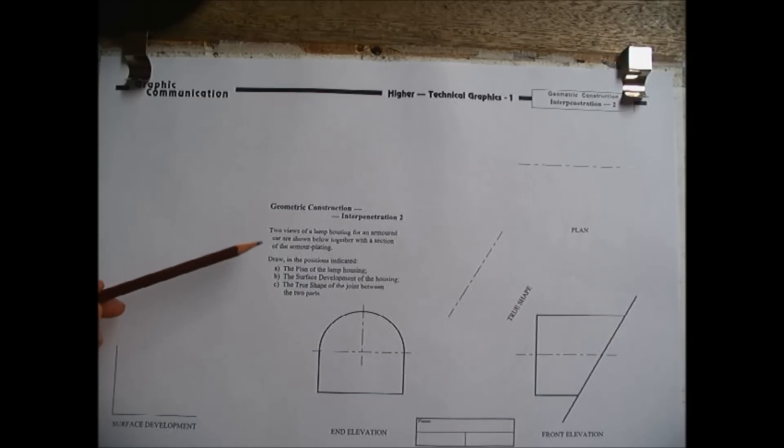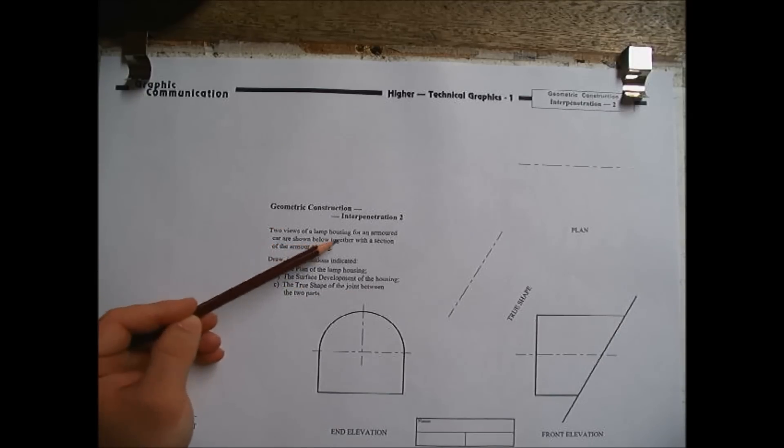So drawing number 2, a bit more complex, it's got a couple more elements into it. The big thing is it's got a curve. So again read the question. It says two views of a lamp house for an armoured car shown below together with a section of the armour plating. How lovely. Draw in the position indicated the plan of the lamp.